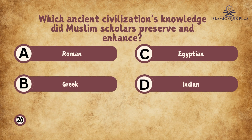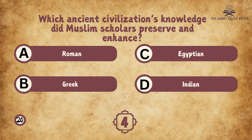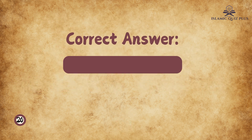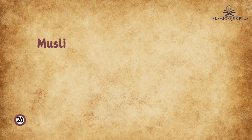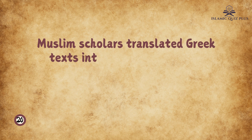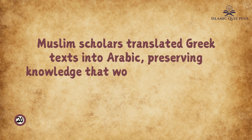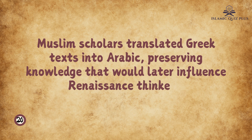Question 20: Which ancient civilization's knowledge did Muslim scholars preserve and enhance? A. Roman, B. Greek, C. Egyptian, D. Indian. The correct answer is B. Greek. Muslim scholars translated Greek texts into Arabic, preserving knowledge that would later influence Renaissance thinkers.